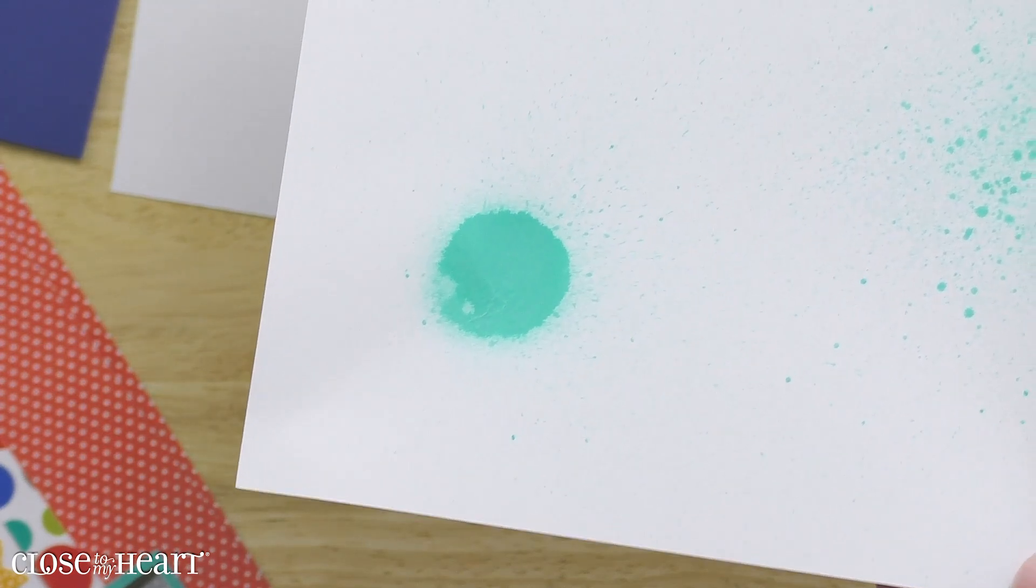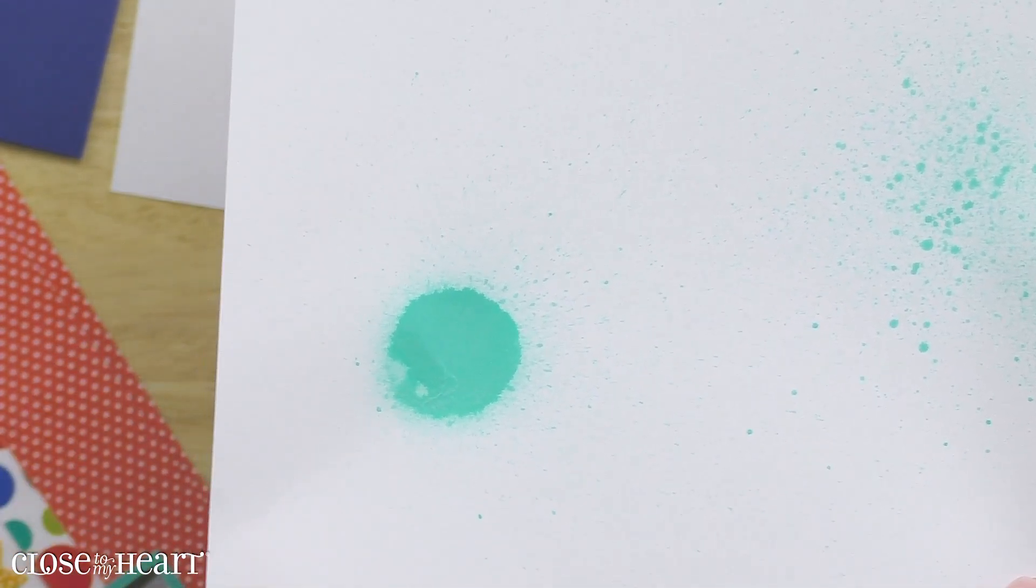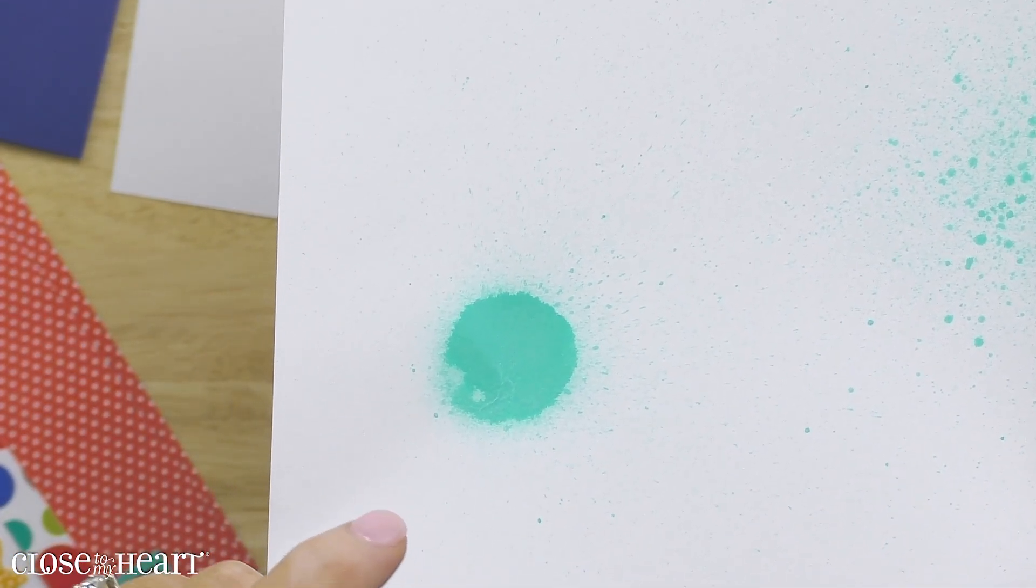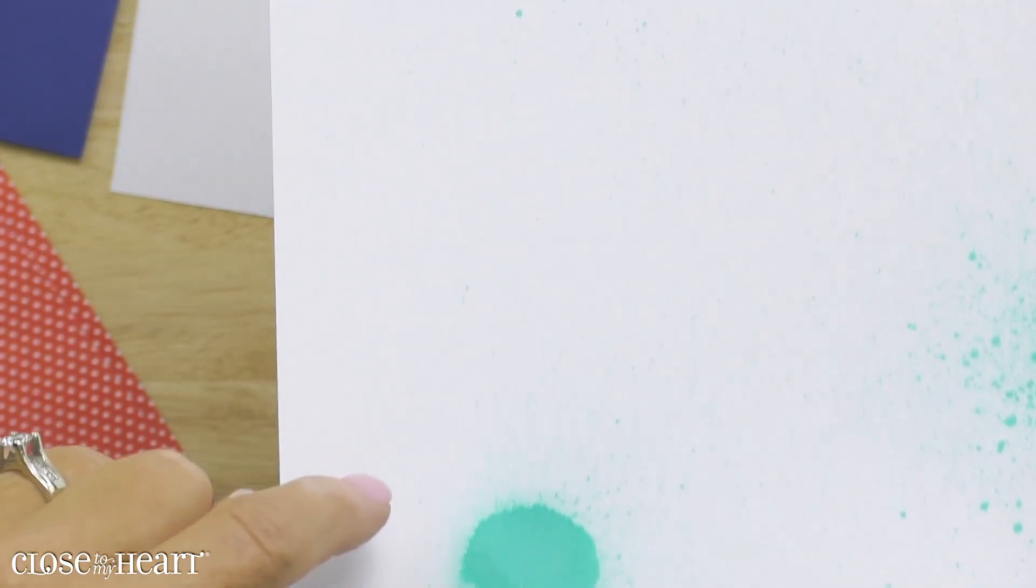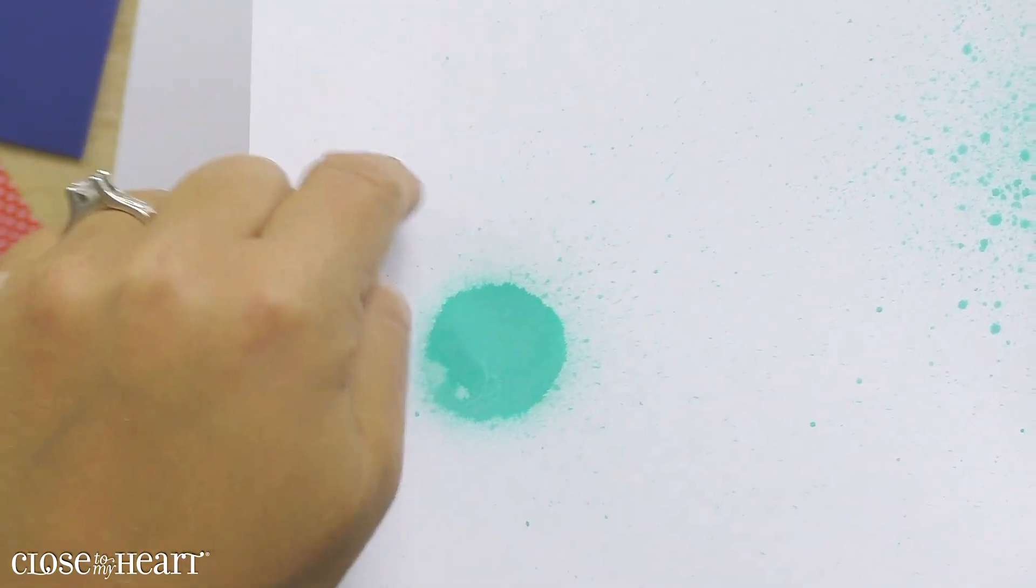And then if you want a real punch of color or a real splatter, go right directly to the project, squirt all the way down, and you'll get a really intense color and you also see you still get that overspray which is really fun as well.